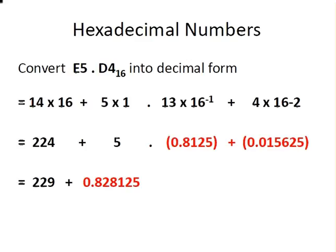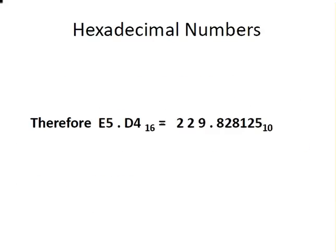To finish off, all I have to do is add those two numbers together, 229 and 0.828125. That's my number: 229.828125. E5.D4 in hexadecimal form is 229.828125 in decimal form. That ends the presentation.